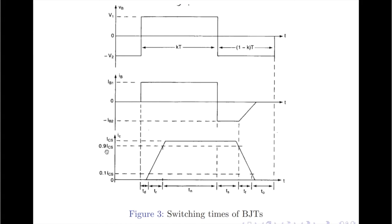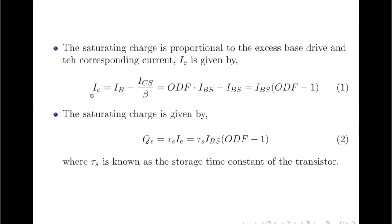From our previous discussions on the steady state characteristics of the BJT, the base current Ib required to saturate the transistor is normally more than the base saturation current Ibs. This excess base current is stored in the base region. The greater the base current Ib, the greater the overdrive factor, and thus the greater the excess charge stored in the base region. This excess charge is called the saturating charge and is proportional to the base drive current Ie, as per the equation: Ie = Ib − ICs/β.